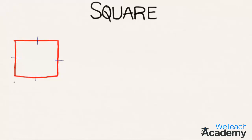For example, if the length of one side of a square is equal to s units, then the length of all other sides will also be equal to s.